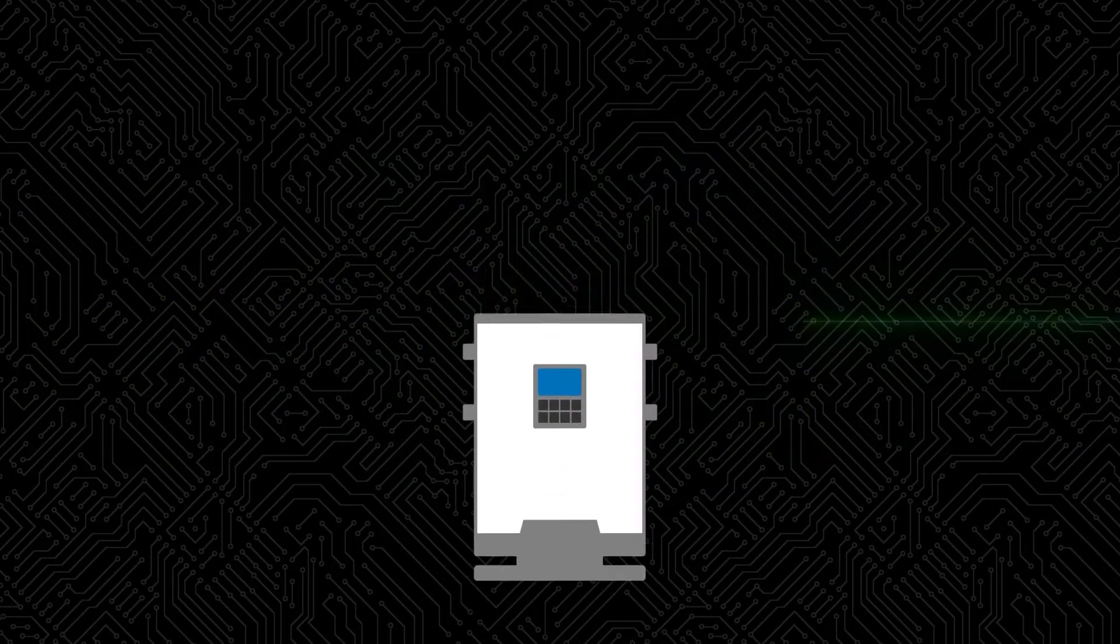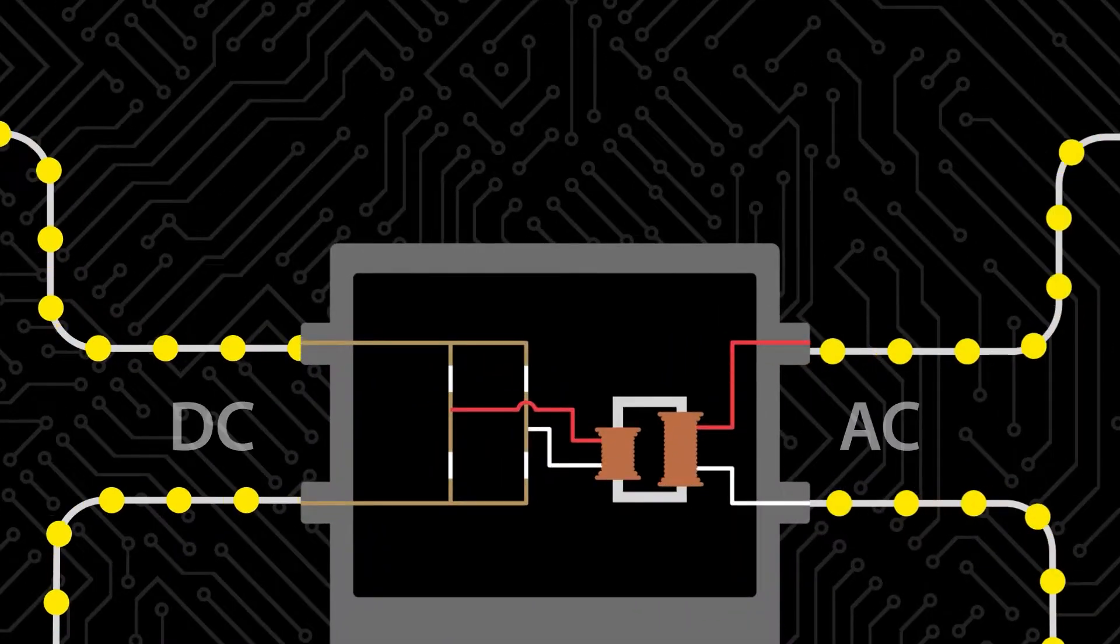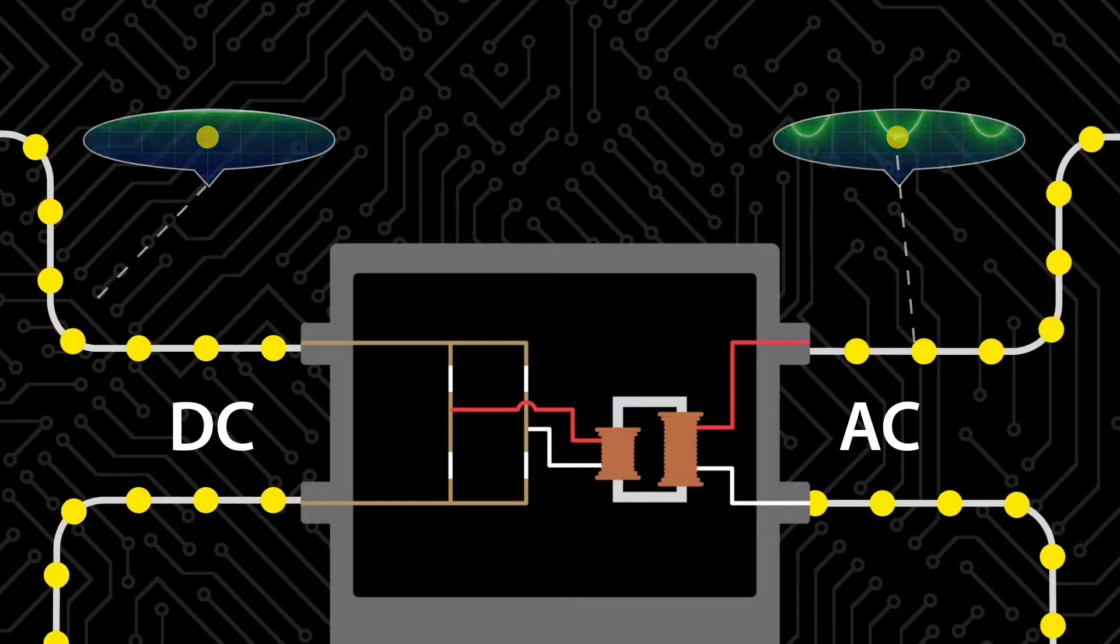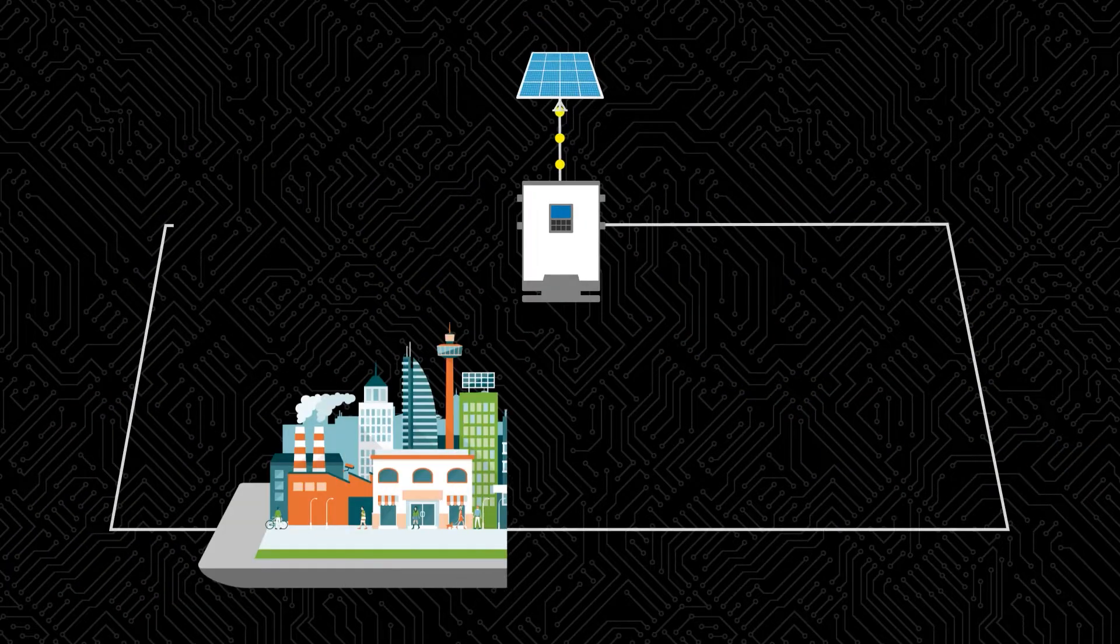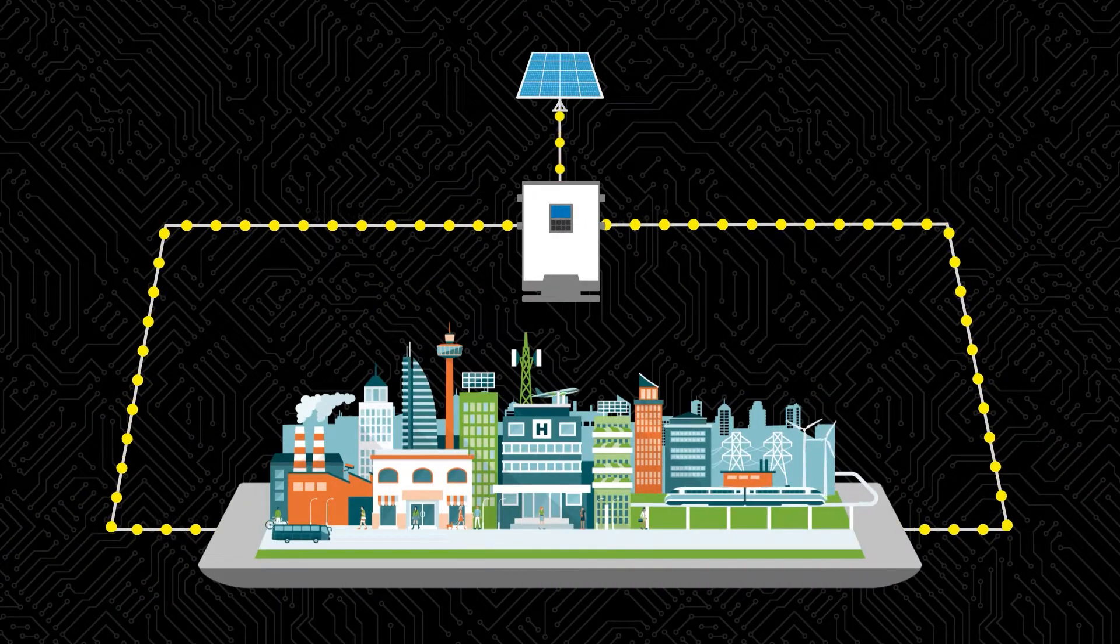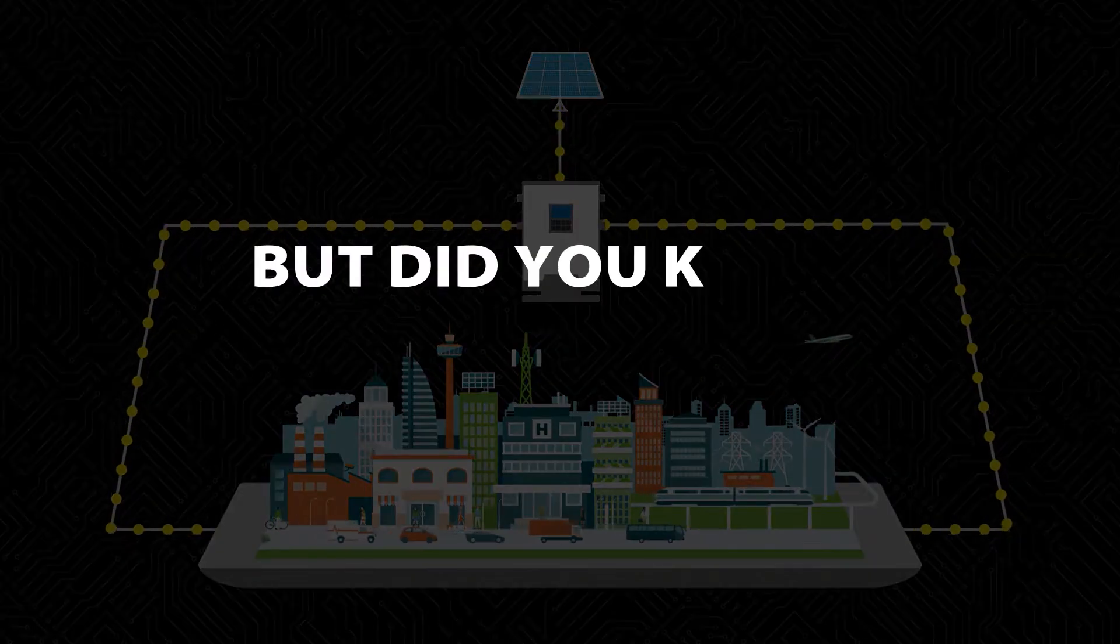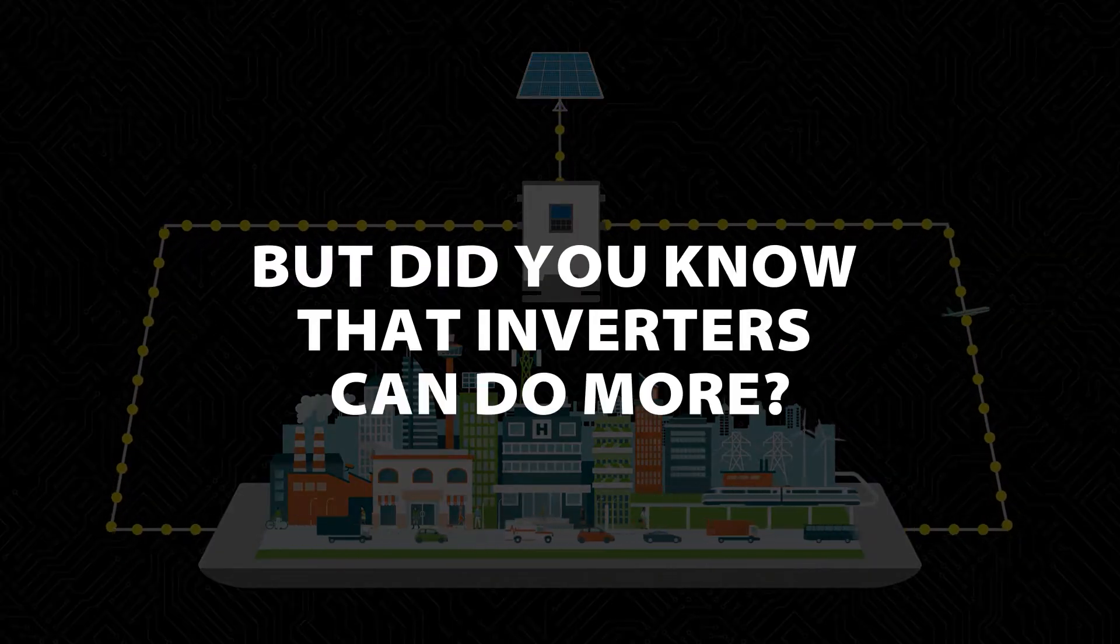You may know that inverters switch electricity from direct current to alternating current. You may also know that inverters deliver power from renewable energy resources and batteries to the electric grid. But did you know that inverters can do more?